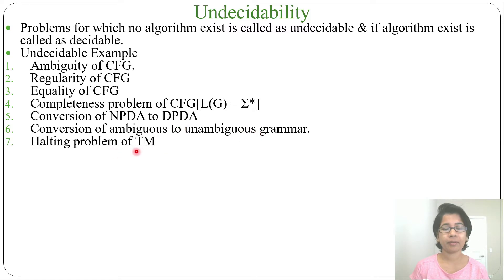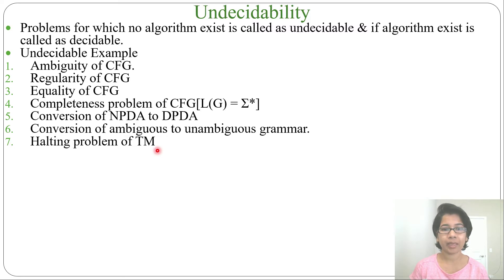Next, the halting problem of Turing machine. The halting problem of Turing machine is undecidable. You cannot say whether it will halt on an accepting state, a rejecting state, or go into a loop. Halting problem of Turing machine is undecidable — you cannot say where it will halt. It may halt on accept, it may halt on reject, or it may go into a loop. When it goes into a loop, you cannot say whether it will be accept or reject. That's why the halting problem of Turing machine is undecidable.